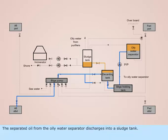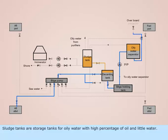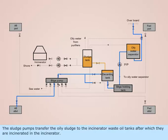The separated oil from the oily water separator discharges into a sludge tank. Sludge tanks are storage tanks for oily water with high percentage of oil and little water. The sludge pumps transfer the oily sludge to the incinerator waste oil tanks, after which they are incinerated in the incinerator.